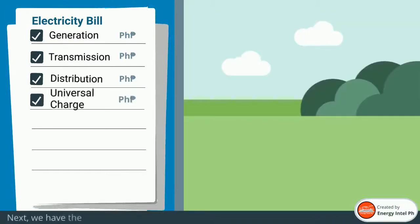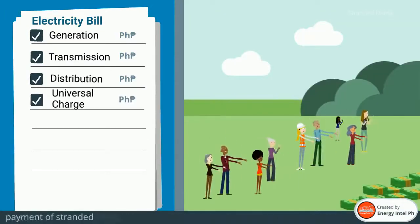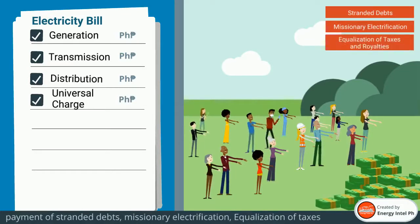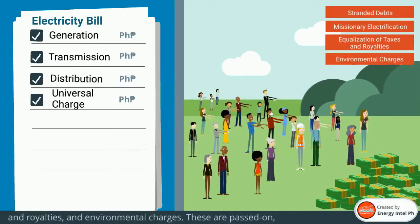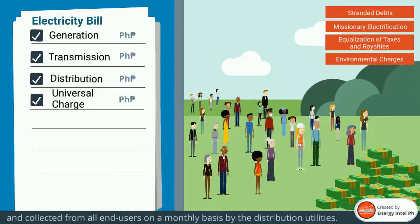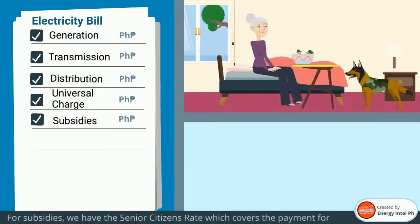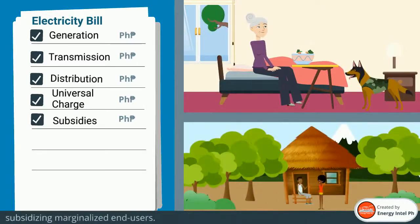Next, we have the universal charges, which are non-bypassable charges for the payment of stranded debts, missionary electrification, equalization of taxes and royalties, and environmental charges. These are passed on and collected from all end users on a monthly basis by the distribution utilities. For subsidies, we have the senior citizens rate, which covers the payment for subsidizing senior citizens, and the lifeline rates, which covers the payment for subsidizing marginalized end users.